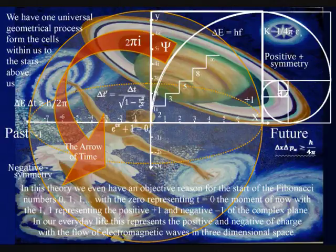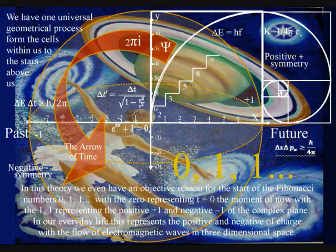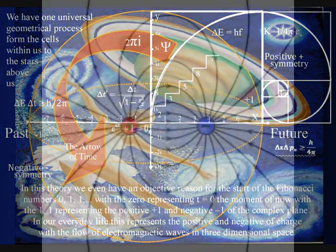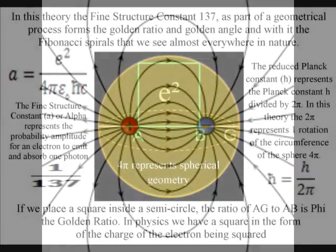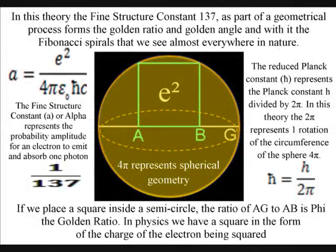In this theory we even have an objective reason for the start of the Fibonacci numbers: 0, 1, 1, with the zero representing t equals zero, the moment of now, with the 1 plus 1 representing the positive one and negative one of the complex plane. In our everyday life this represents the positive and negative of electromagnetic waves with everything being based on one geometrical process.